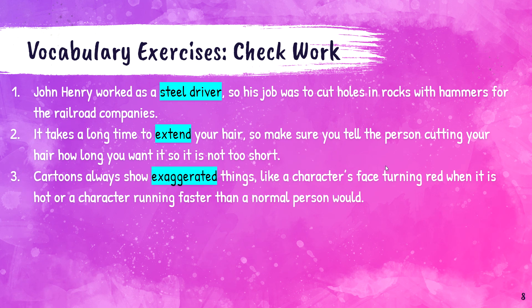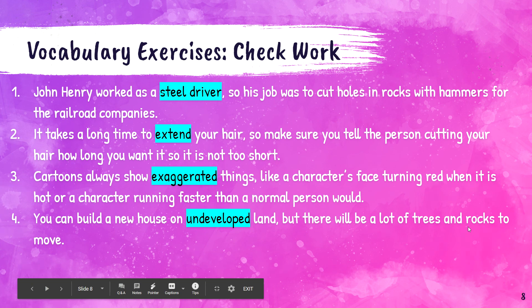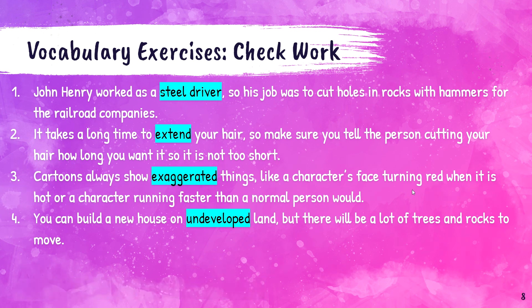Number three: cartoons always show exaggerated things, like a character's face turning red when it is hot or a character running faster than a normal person would. Exaggerated means more than normal — we take something and exaggerate it, we make it crazier than normal. Number four: you can build a new house on undeveloped land, but there will be a lot of trees and rocks to move. We know that undeveloped land has lots of nature, trees, and rocks in it, so it's not as easy to build on undeveloped land.